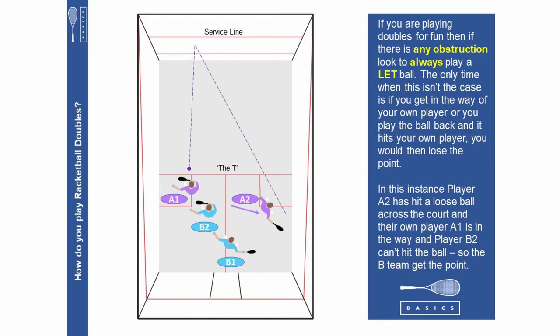If you're playing doubles for fun then if there is any obstruction look to always play a let ball. The only time when this isn't the case is if you get in the way of your own player or you play the ball back and it hits your own player. You would then lose the point. In this instance player A2 has hit a loose ball across the court and their own player A1 is in the way and player B2 can't hit the ball so the B team get the point.